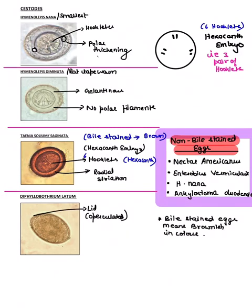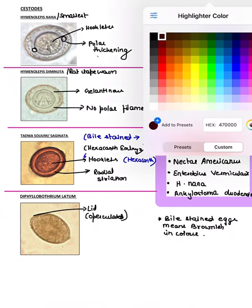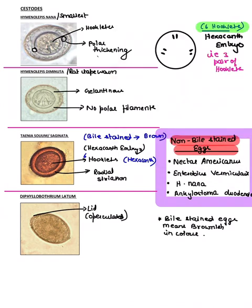Starting with the cestodes — we have three families in parasitology: cestodes, trematodes, and nematodes. For cestodes, the important feature is the presence of six hooklets, known as the hexacanth embryo — three pairs of hooklets. You can see in the image: one pair, two pair, three pair. This is the key feature of cestodes.